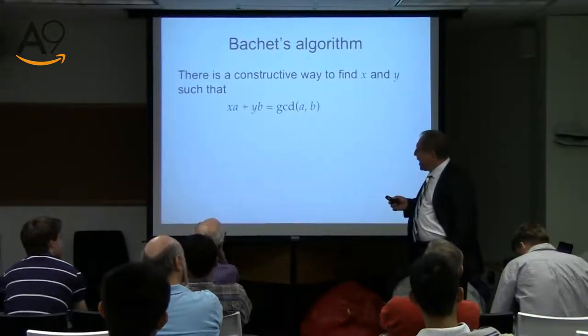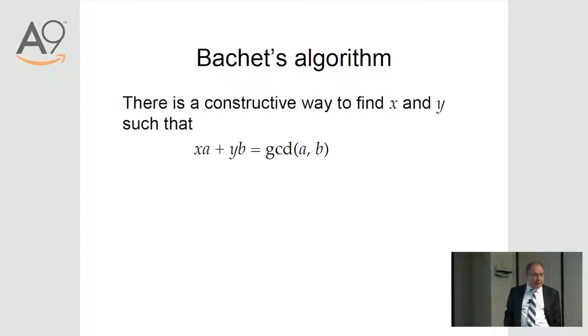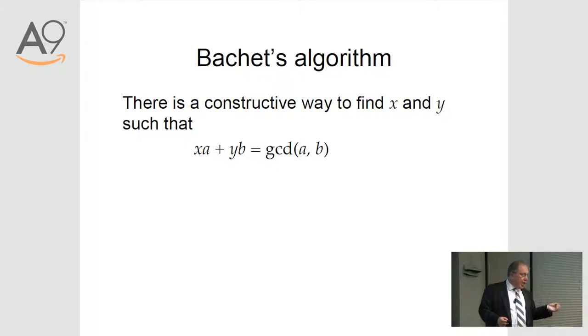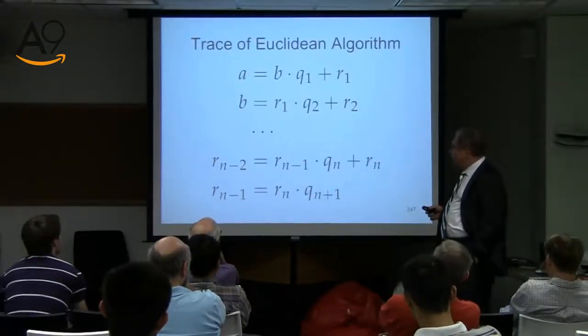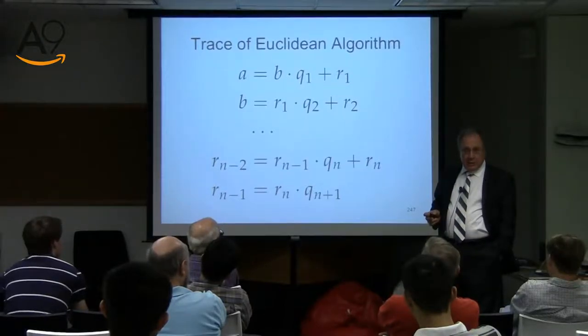So let us look at the algorithm. We want to find XA plus YB, which is equal to GCD. We want to come up with the algorithm because while we know they exist, it doesn't do us any good until we know what they are. Let us start with doing a trace of the Euclidean algorithm. Let's not do it as a loop, but let's write it out.